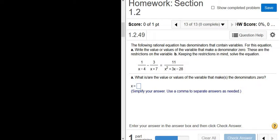In this problem we have to solve an equation. So we have 1 over x minus 4 minus 3 over x plus 7 equals 11 over, and over here it says x squared plus 3x minus 28.